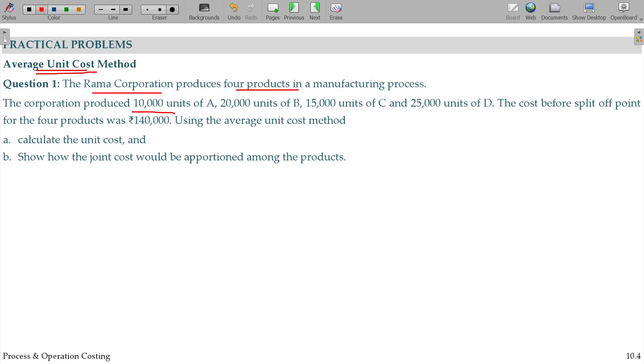The Corporation produced 10,000 units of A, 20,000 units of B, 15,000 units of C, and 25,000 units of D.